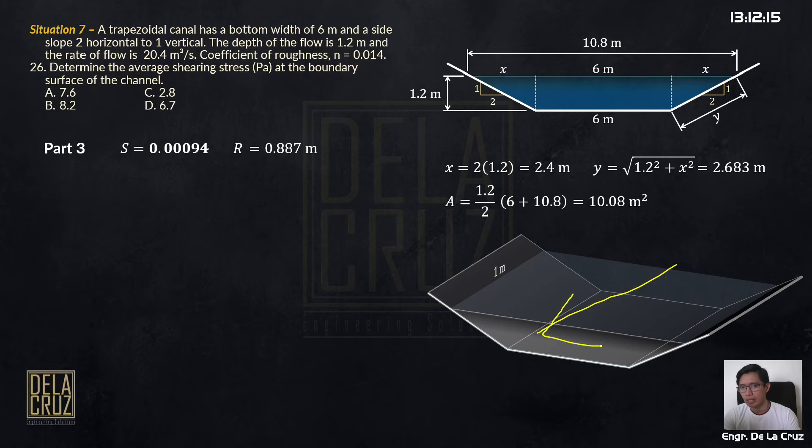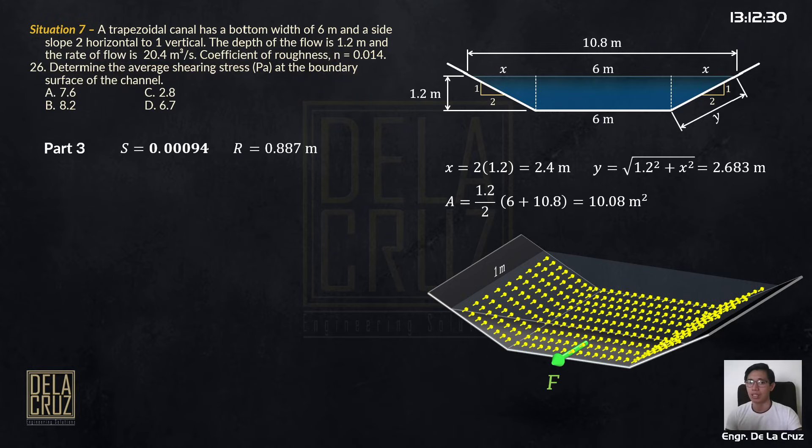So we will just consider 1 meter strip. Now, if there's flow here, water is flowing. Then it exerts a force, right? It exerts force. Now because of that force, there are shearing stresses at the boundary. These are the shearing stresses at the boundary of the flow, at the perimeter. Because it resists the forces there. And the shearing stress is just force over area, shearing area A sub V. Now we will define this one in terms of variables first, so we can derive the formula.